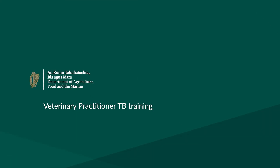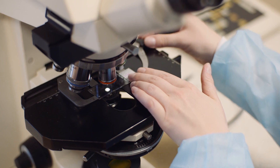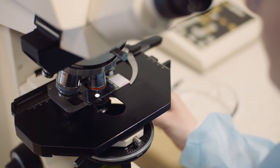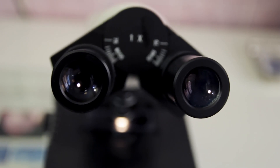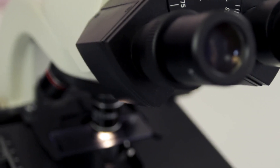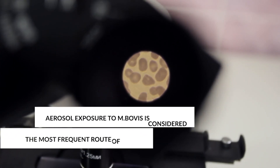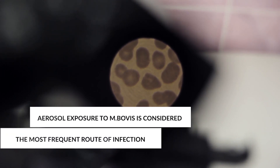Bovine tuberculosis is a chronic bacterial disease of animals and humans caused by Mycobacterium bovis. In a large number of countries, bovine TB is a major infectious disease among cattle, other domesticated animals, and certain wildlife populations. Transmission to humans constitutes a public health problem. Aerosol exposure to M. bovis is considered to be the most frequent route of infection.